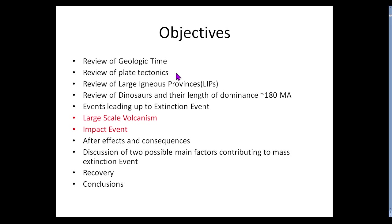In order to break up plates, you need to have massive upwellings of magma from the mantle, and we call those large igneous provinces. They are all over the world throughout geologic time and they are game changers for our planet. The best way to think of it is the planet gets a boil and it pops, releasing an incredible amount of magma, putting soot and dust into the atmosphere — initially cooling it, but then eventually causing a runaway greenhouse effect.